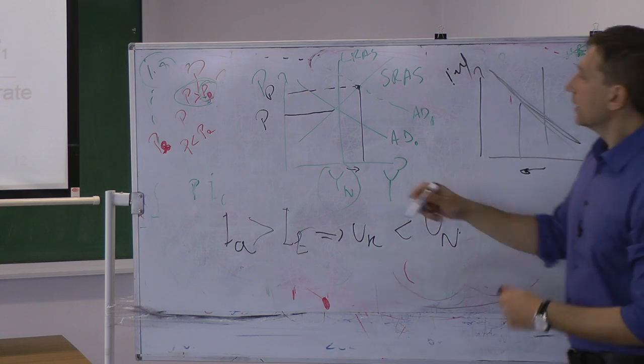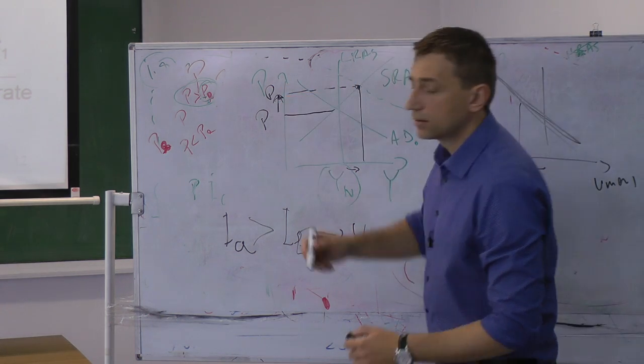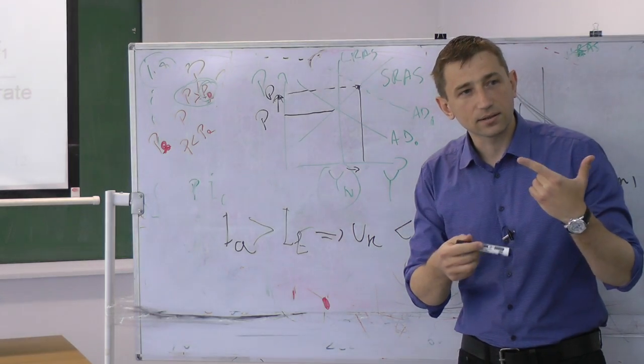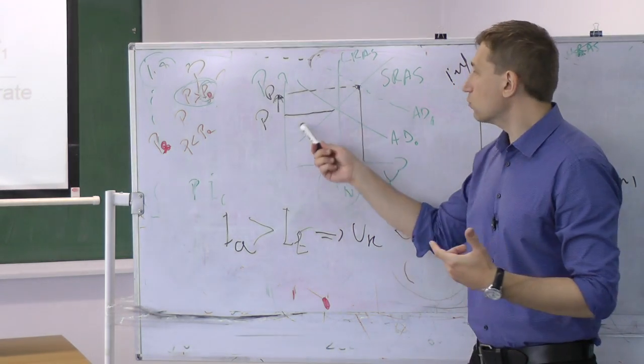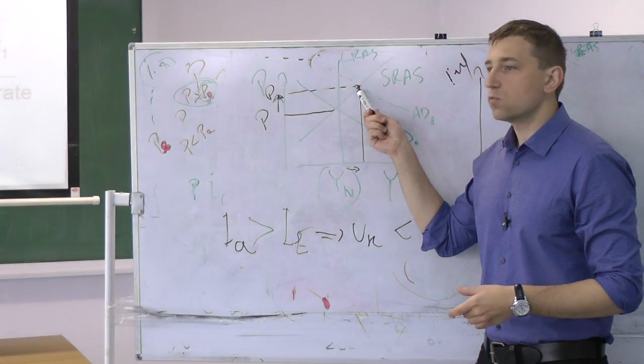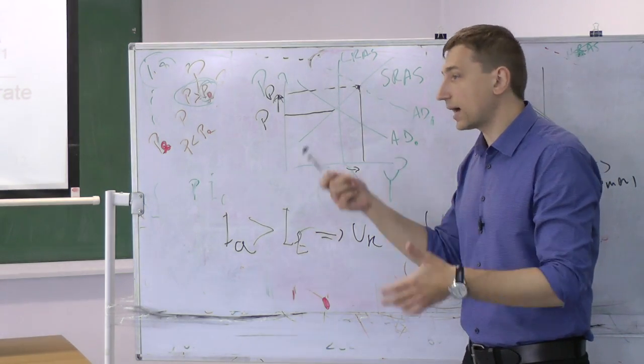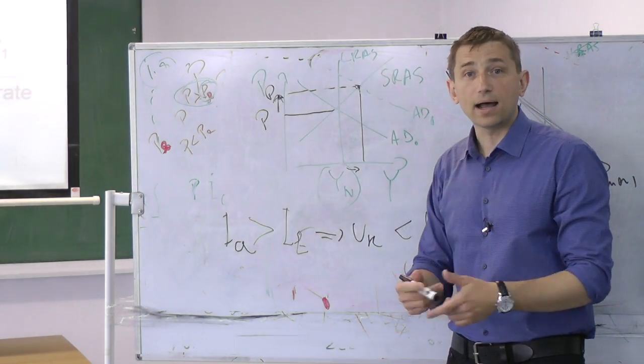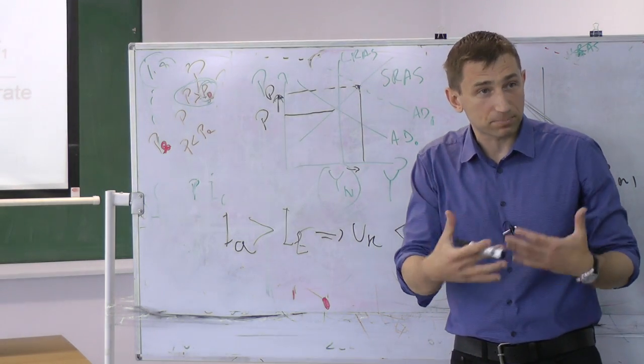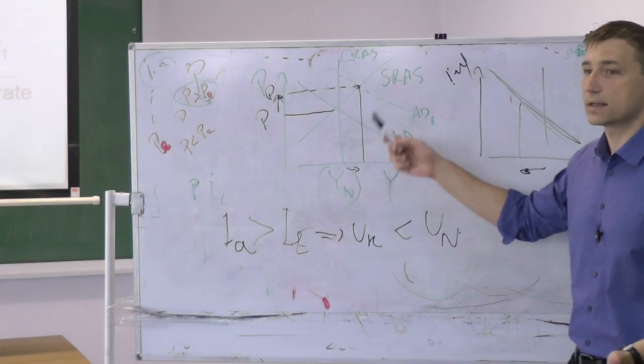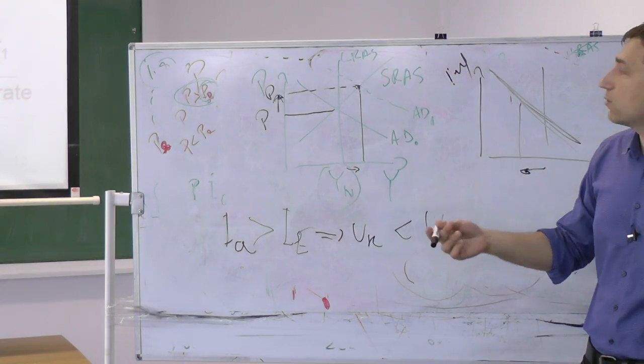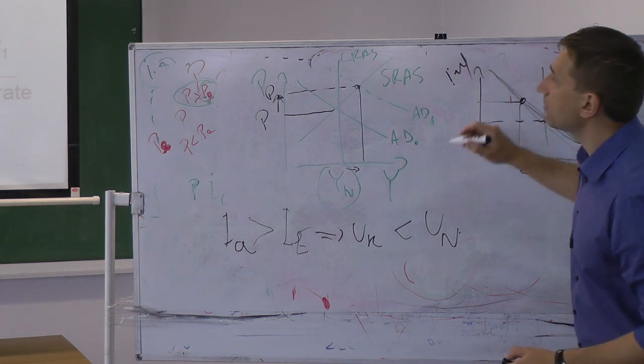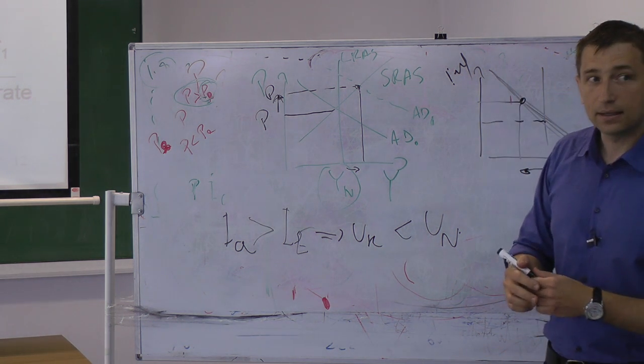Now, inflation is higher. People will do what? Adjust the expectations. The workers will say we cannot work any longer at this salary because inflation is higher. My real purchasing power, my purchasing power is smaller. I don't want to work like this. I need an increase in my wage, which will change the expected price level.